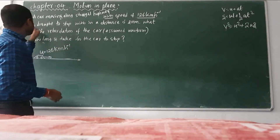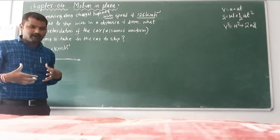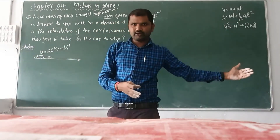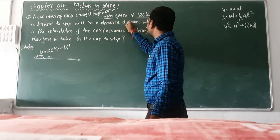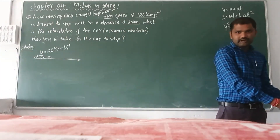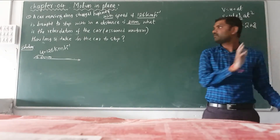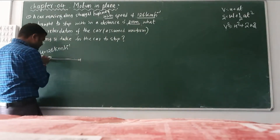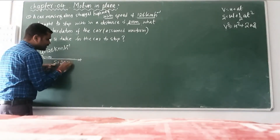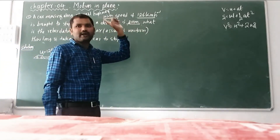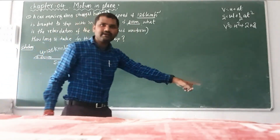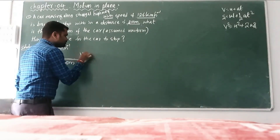That car is brought to stop. Initially moving with 126 km per hour, it is brought to stop within a distance of 200 meter. The car has to be stopped — it must cover 200 meter. The distance covered by the car is 200 meter. When the car comes to rest, what about final velocity? Final velocity is equal to zero.